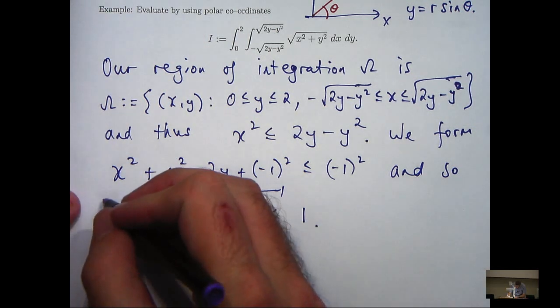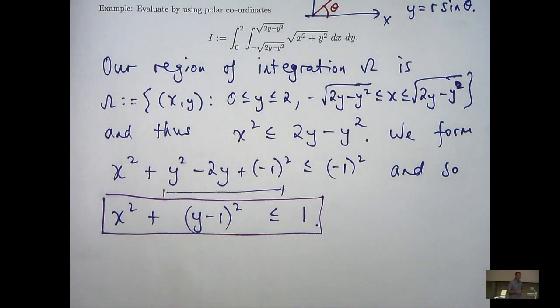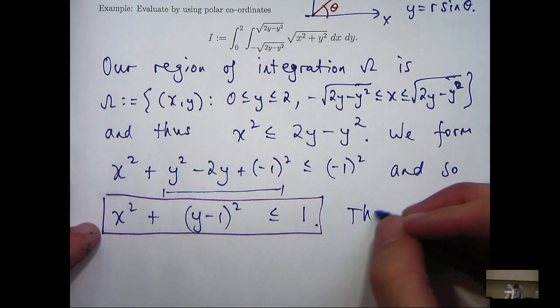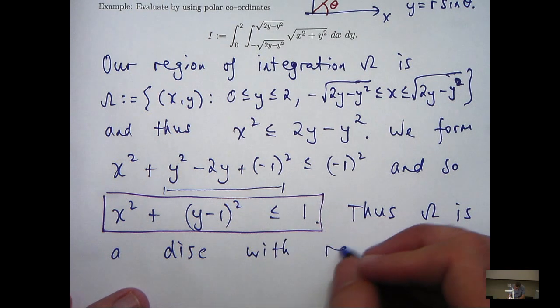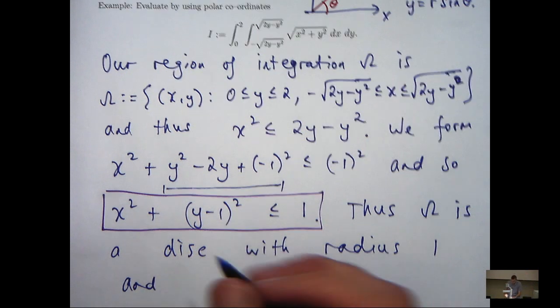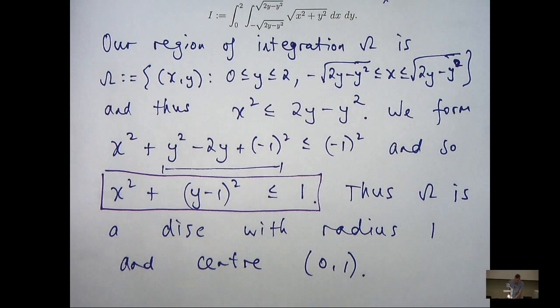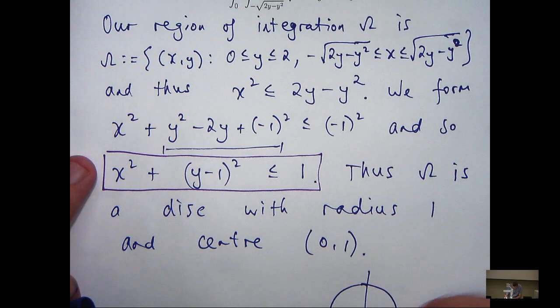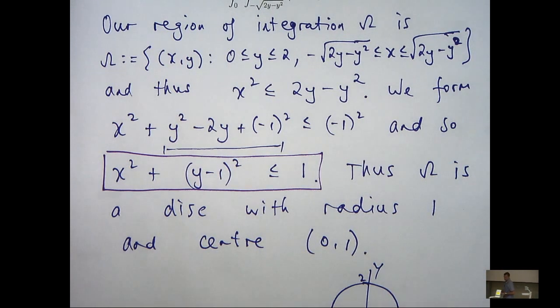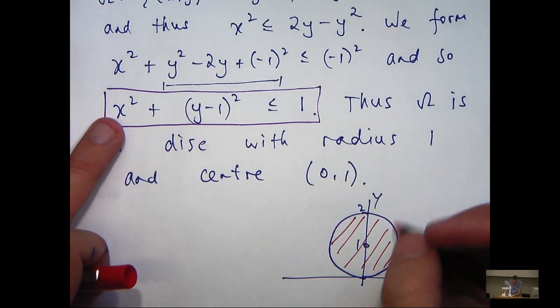Now, this looks a little bit like the equation for a circle, but remember we have an inequality sign here. So this is actually an inequality that represents a disk with radius 1 and center at x equals 0, y equals 1. So our region of integration is this disk here.